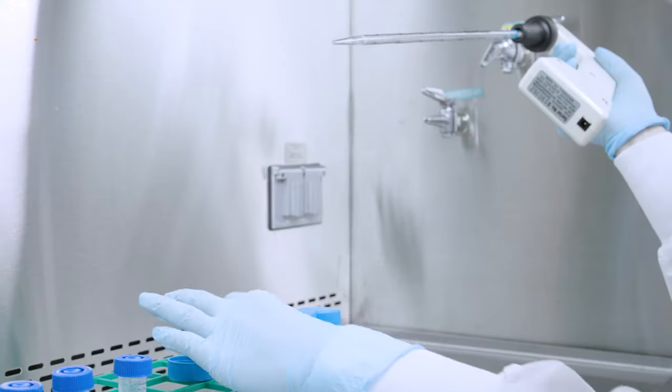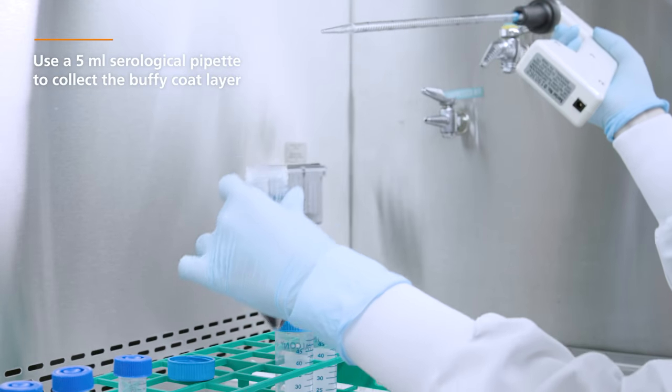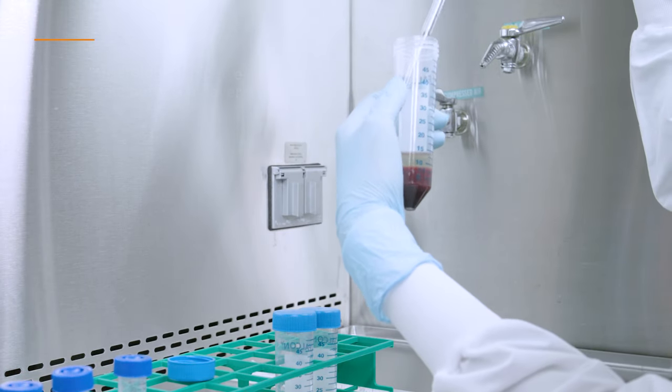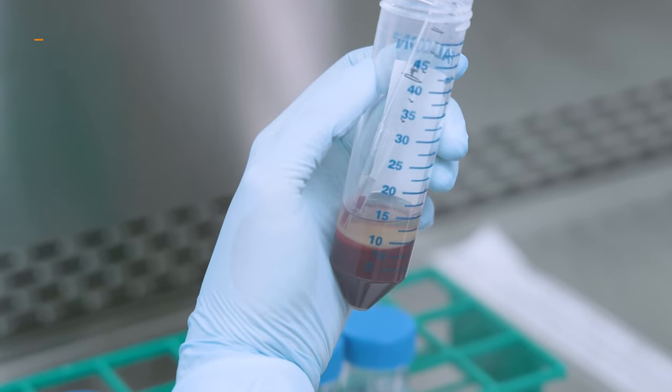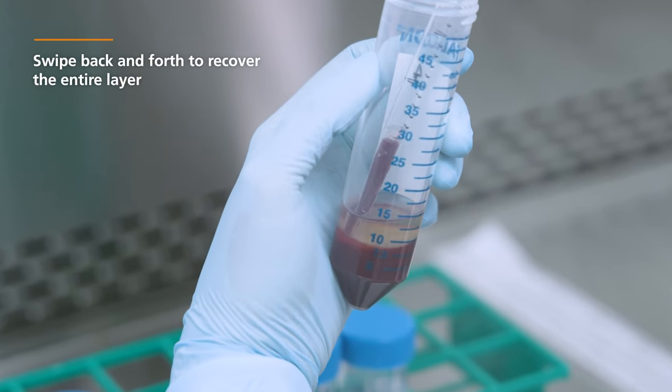Then, use a 5 mL serological pipette to collect the Buffy Coat layer. Start collecting from the tube's edges. Swipe back and forth to recover the entire layer.